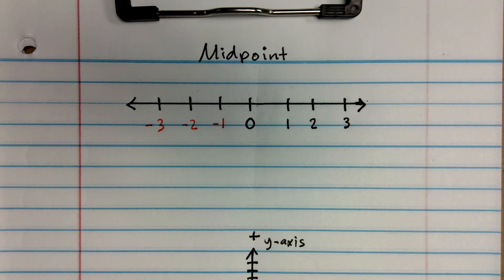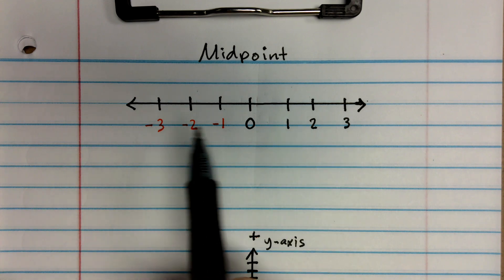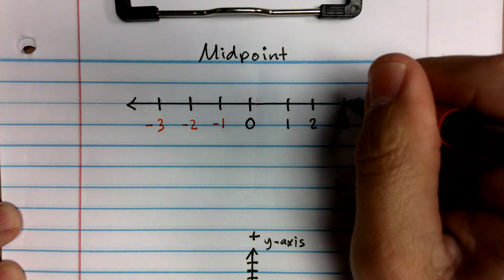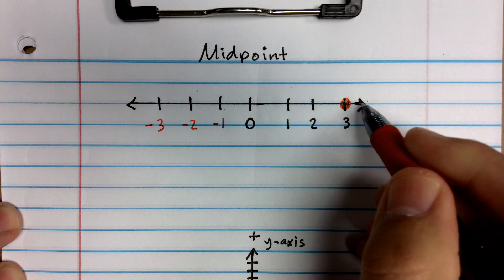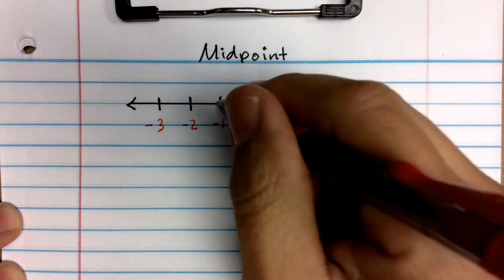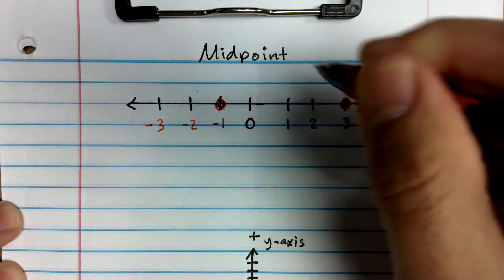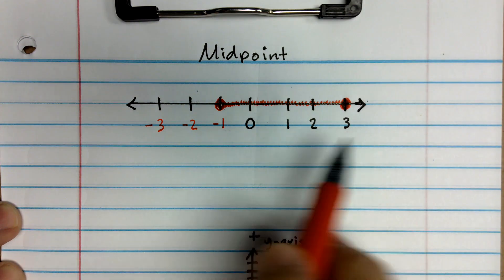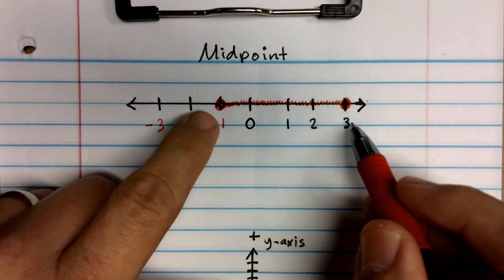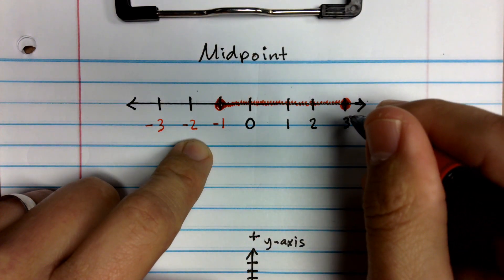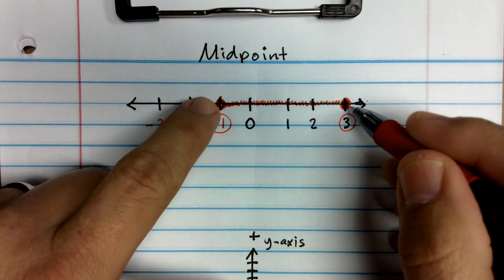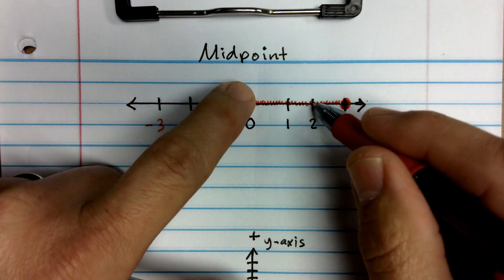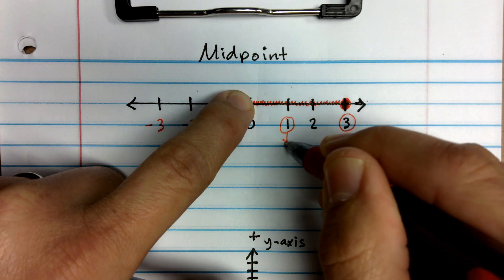In this video we're going to look at what a midpoint is and how to find it. Here's a number line, and if I put a couple points on it — a red dot at 3 and a point at negative one — I can shade this segment. To find the midpoint I count in one unit from each end, and the value that stands in between is one. So one would be my midpoint.